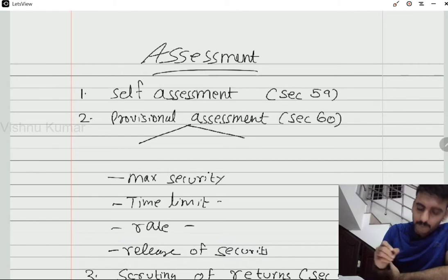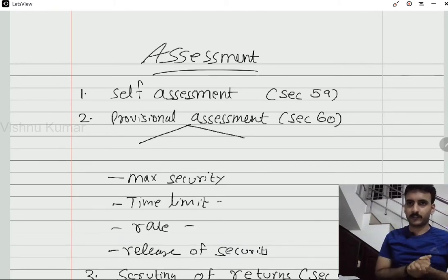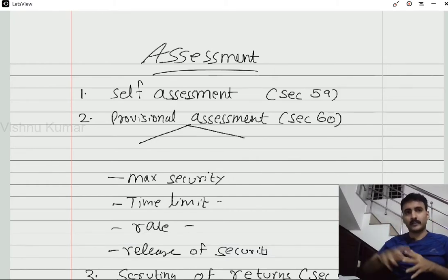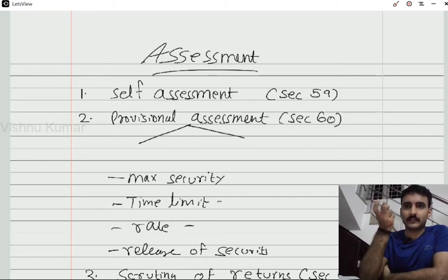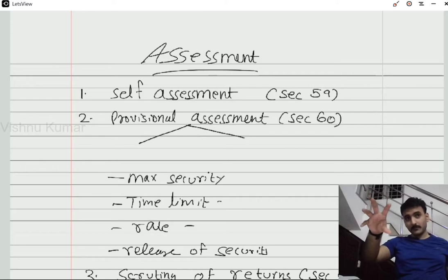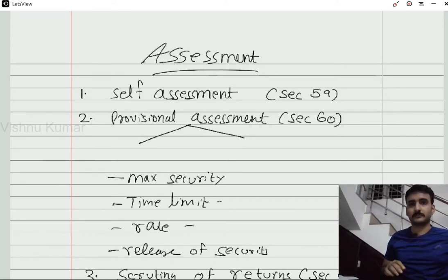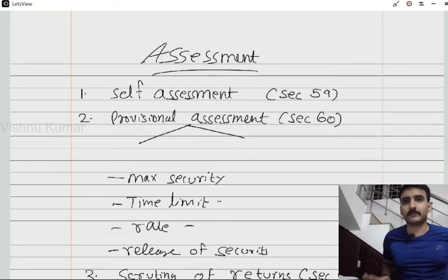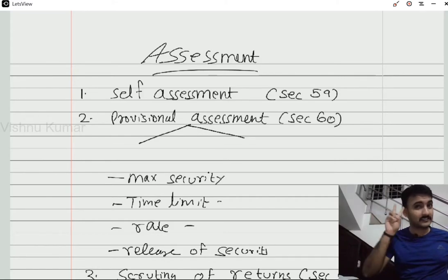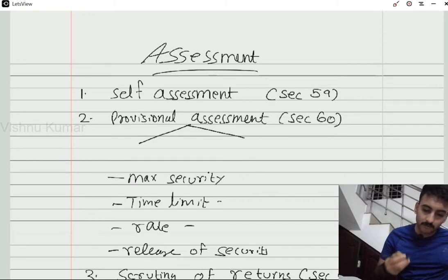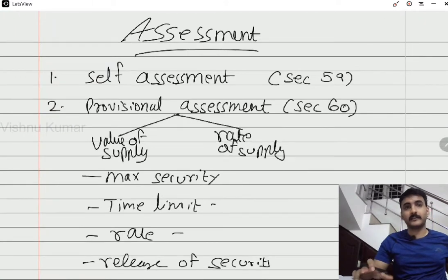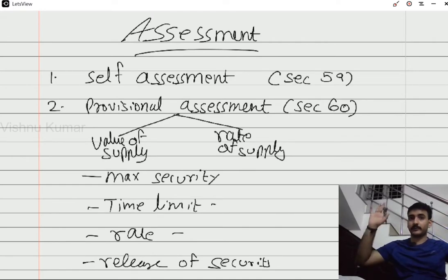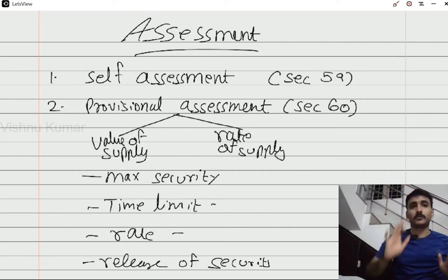The next important area is provisional assessment. To identify this provisional assessment — the period of tax liability will be the same. A provisional assessment is going to be taxed. It applies in two cases: where you cannot determine the value of supply, and where you cannot determine the rate of supply. In these two cases, we can do a provisional assessment.